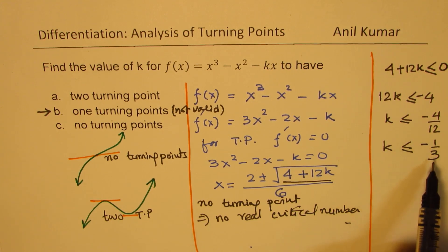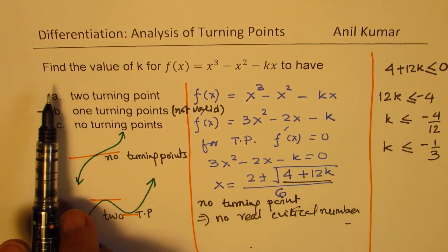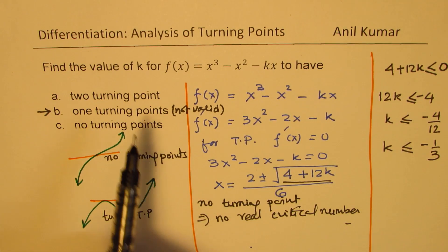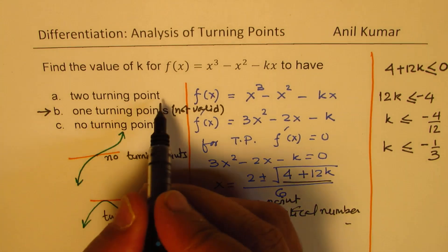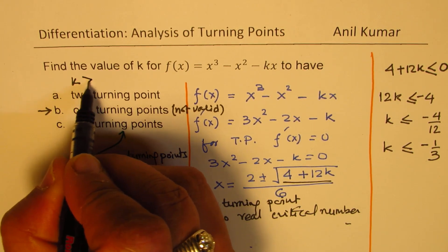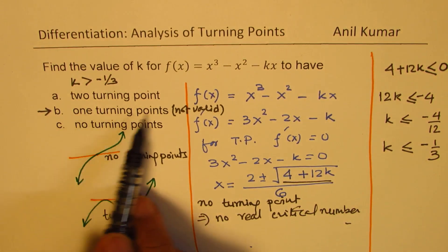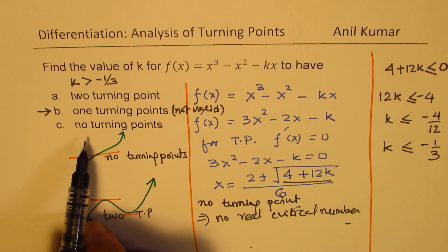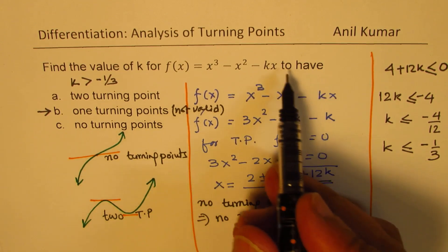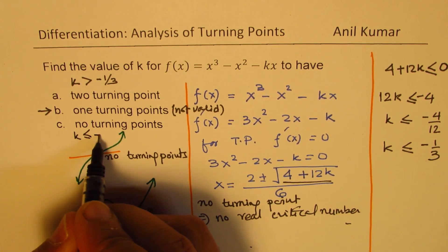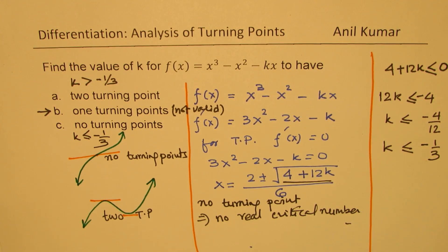So k ≤ -1/3 gives no turning points. For two turning points, the value of k must be greater than -1/3. One turning point is not possible. For no turning points — meaning the function will have a point of inflection — k must be less than or equal to -1/3. That is how we answer this question.